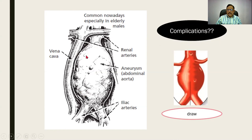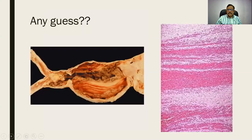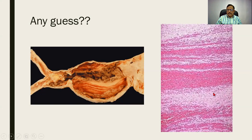One of the complications shall be a distension within which we can find thrombus formation. You are finding some alternate dark and light lines — this is a distended portion of the aorta. There is a thrombus that has developed within it with alternate dark and light lines representing areas of RBCs and the paler WBCs. These are called the lines of Zahn.